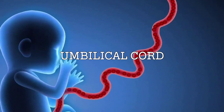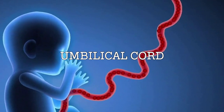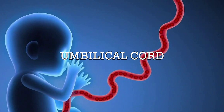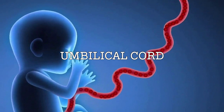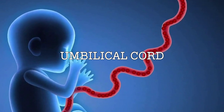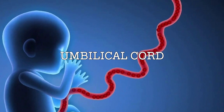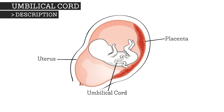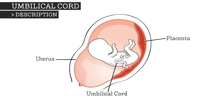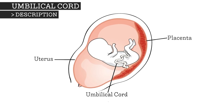An umbilical cord is a tube containing veins and arteries that supplies oxygenated, nutrient-rich blood and removes low oxygen, nutrient-depleted blood from a developing embryo or fetus of a placental mammal. A placenta is an organ that develops and attaches to the wall of the uterus during pregnancy.